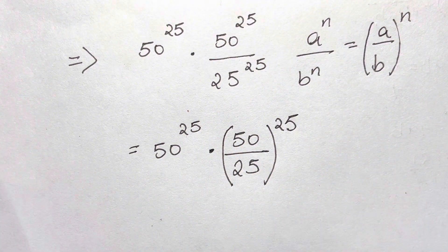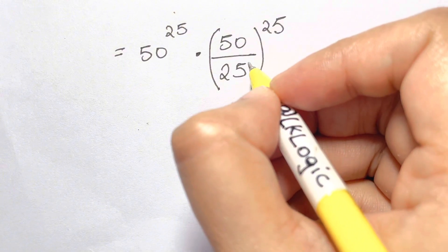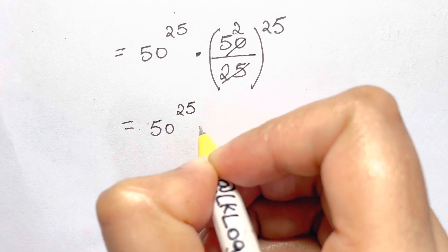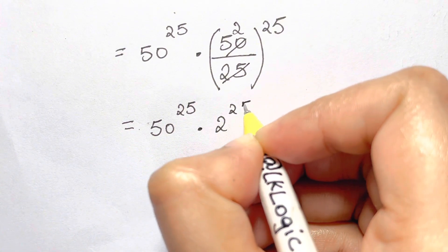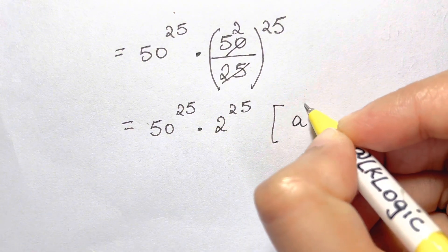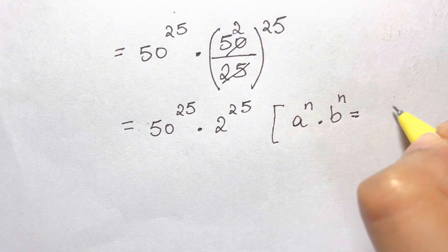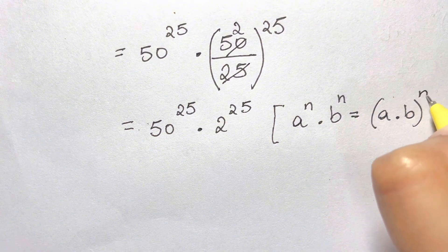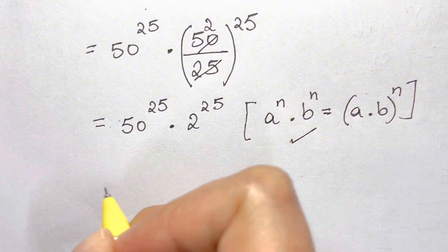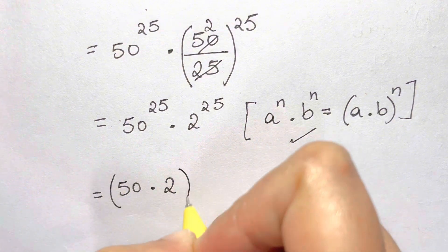Since 25 times 2 is 50, we get 2 here, giving us 50^25 times 2^25. Now we apply the rule a^n · b^n = (a·b)^n to combine these into (50 times 2)^25.